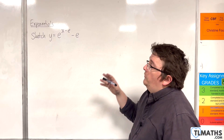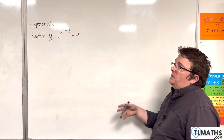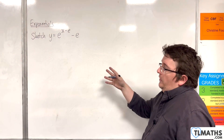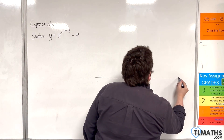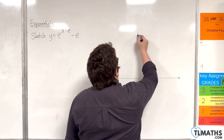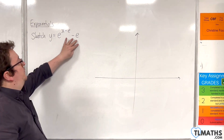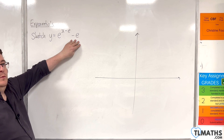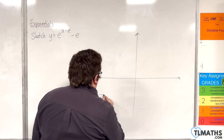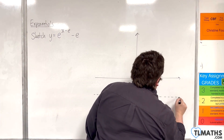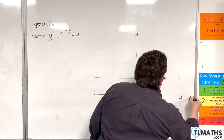In this example, I want to sketch y equals e to the power of x take away e, take away e. First of all, we want to identify the horizontal asymptote, which is when y equals minus e. So here we go — y equals minus e.